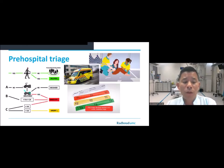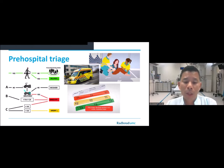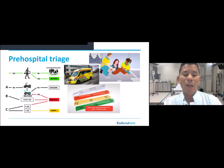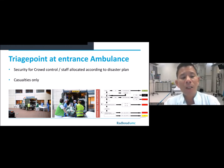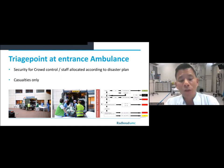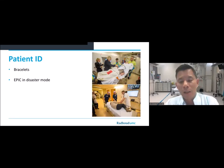Triage is performed pre-hospitally by our pre-hospital nurses — every patient receives a white identification bracelet with name and date of birth, plus a colored triage bracelet. Red indicates vital impairment; green indicates a walking patient. On arrival at the hospital, a secondary triage takes place at the ambulance entrance. T3 or P3 walking patients go to the outpatient clinic; T1 or T2 go to the ER. Identification is essential, so patients receive an additional hospital bracelet at the ER entrance, which is especially useful for family reunion.